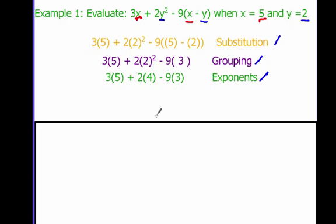Now I need to do multiplication and division from left to right. I have 3 times 5 plus 2 times 4 minus 9 times 3. I'm going to do all of my multiplying in one step. 3 times 5 gives us 15.